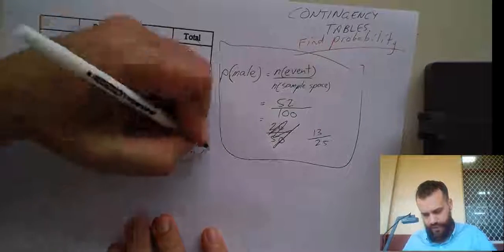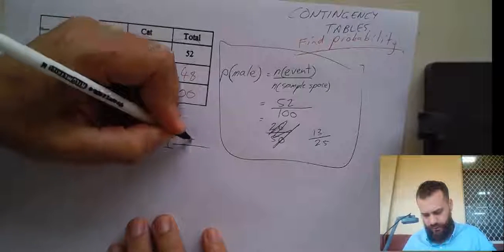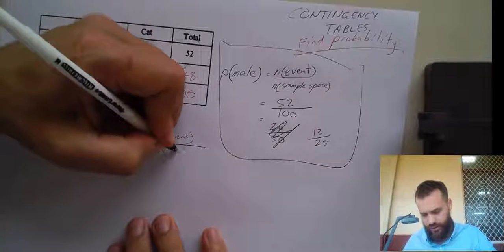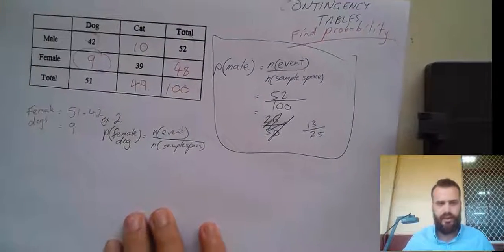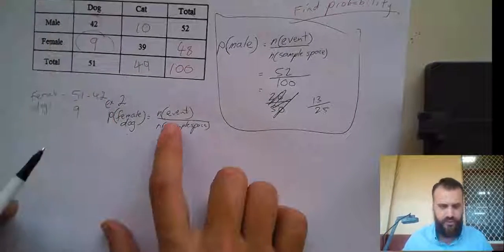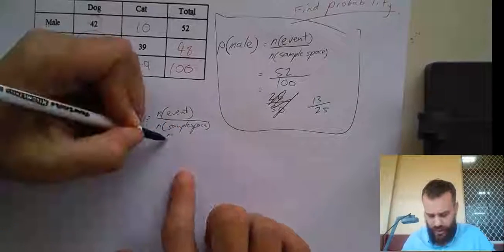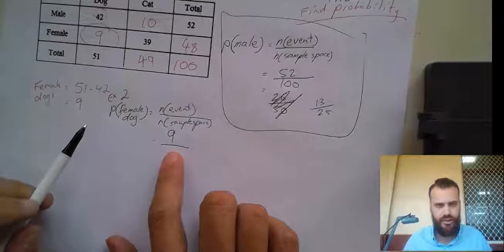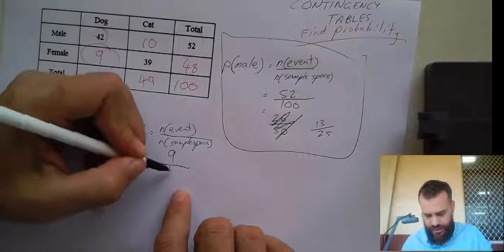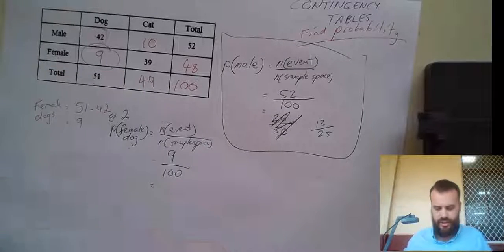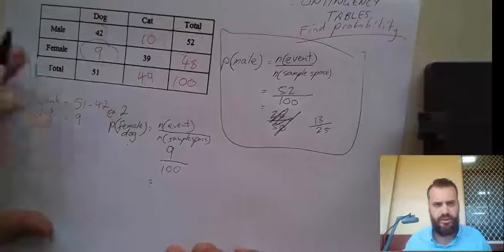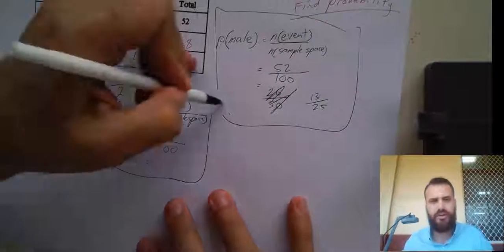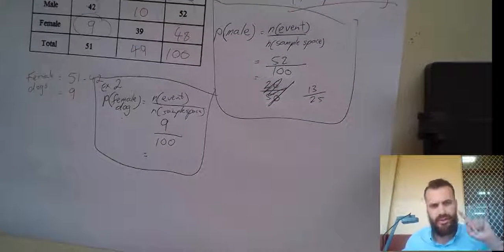So, the number of different ways this can happen divided by the size of the sample space. All right, now the number of different ways that can happen. Well, there's nine female dogs and total there's 100. That's it. You can't simplify nine to 100, so you can put it as a percentage 9% if you wanted to.